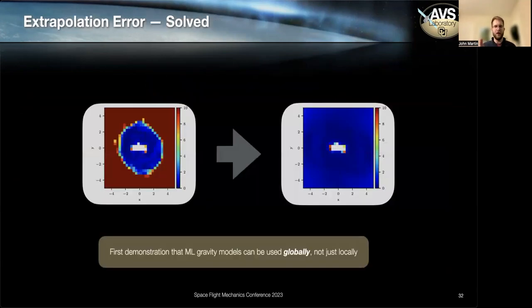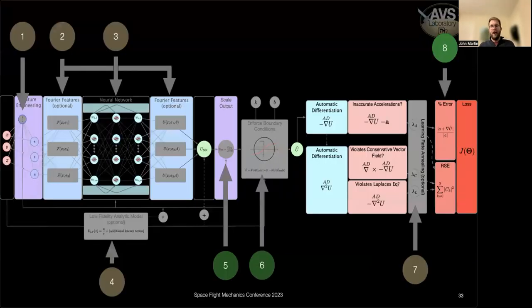So just to show what this looks like for that original figure, you can see regardless of the fact that we trained only out to three radii, as soon as we move to higher altitudes, things remain well conditioned all the way out to infinity. And I think this is a really important development for these machine learning gravity models, which show that they aren't just useful locally, but they can actually be used globally. You can trust them out to infinity.